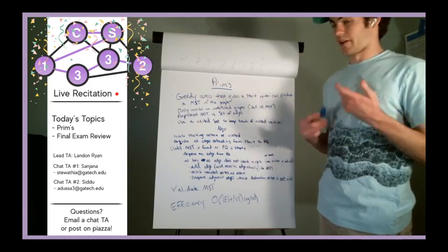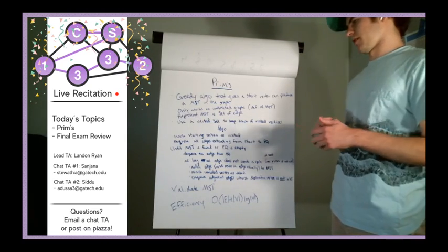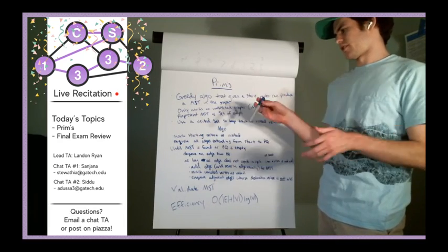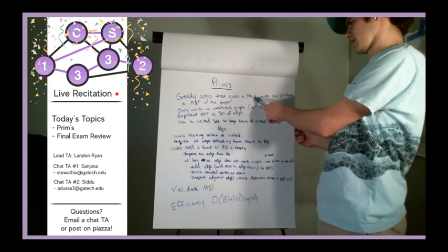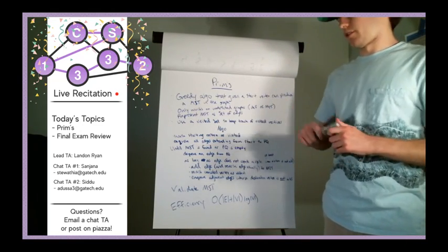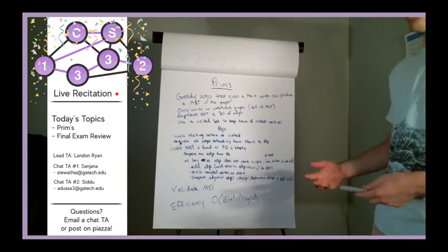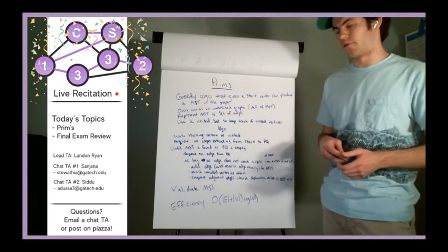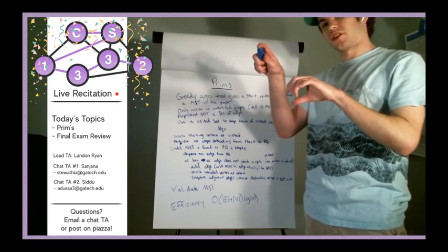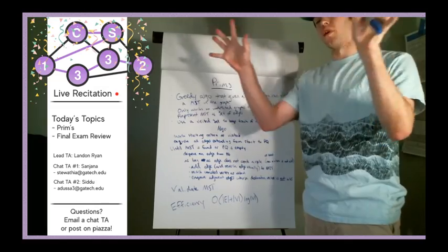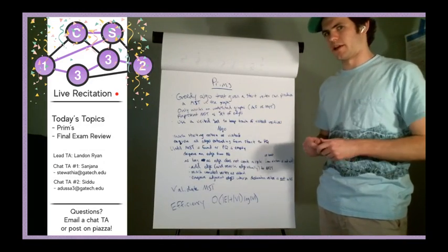Prim's only works on undirected graphs — same as Kruskal's — because of our definition of a minimum spanning tree. We represent the MST as a set of edges, same as Kruskal's. The difference from Kruskal's is we use a visited set, which is a hash set — the same kind used in BFS, DFS, and Dijkstra's. We use a visited set because we have a starting vertex, so we don't have to worry about cycles from clusters merging.